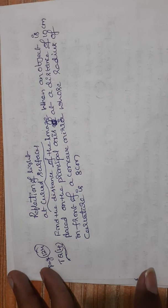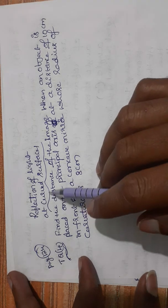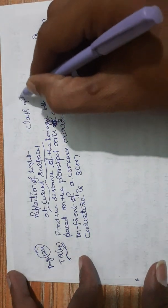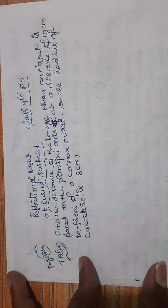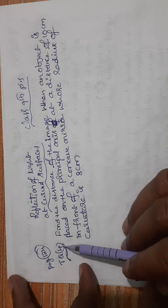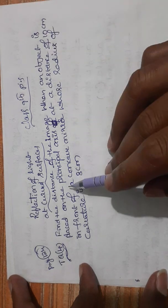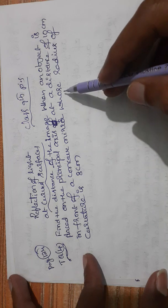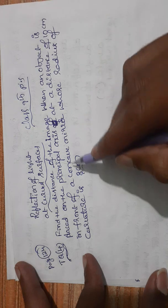Hi students, welcome to our physics class. In this class we are going to learn about the solution of some numerical problems in the reflection of light at curved surfaces, class 9th physical science. Textual question number four: find the distance of the image when the object is placed on the principal axis at a distance of 10 centimeters in front of a concave mirror whose radius of curvature is 8 centimeters.